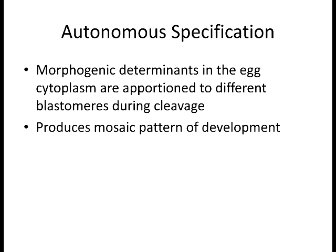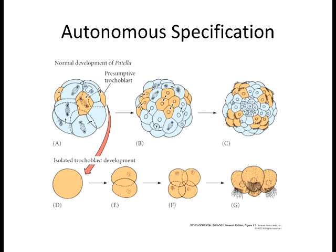The reason for autonomous specification is that the RNA in the cytoplasm has been sequestered to various areas so that when the cell undergoes mitosis and cleavage, as the cytoplasm partitions itself off, each resulting cell has its own proteins or morphogenic determinants that tell the cell what genes to turn on. It doesn't necessarily need interactions with other cells.